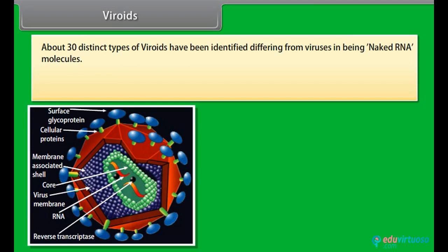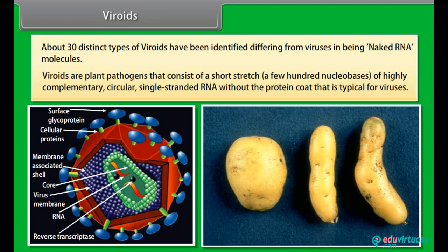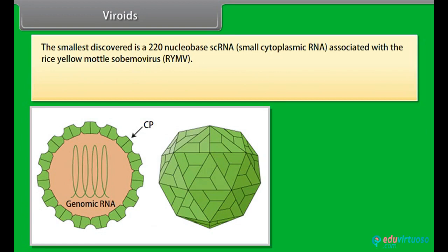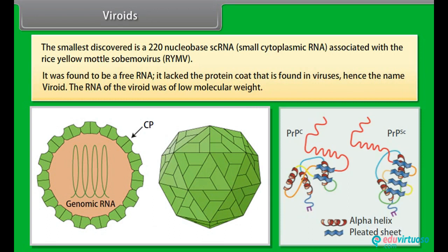About 30 distinct types of viroids have been identified, differing from viruses in being naked RNA molecules. Viroids are plant pathogens that consist of a short stretch — a few hundred nucleobases — of highly complementary, circular, single-stranded RNA without the protein coat that is typical for viruses. The smallest discovered is a 220-nucleobase scRNA associated with the rice yellow mottle Sobemo virus (RYMV). It was found to be a free RNA that lacked the protein coat found in viruses, hence the name viroid. The RNA of the viroid was of low molecular weight.